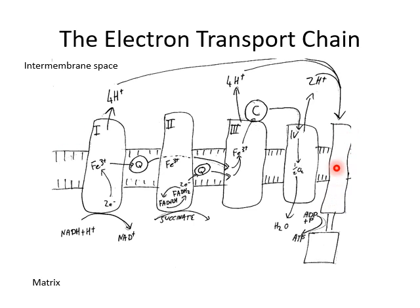On this end we have ATP synthase, which has a protein bridge whereby hydrogen ions can move from the intermembrane space into the matrix, and this causes spinning of a core part of this molecule, which synthesizes our ATP — it literally crushes ADP and phosphate together. We start with NADH plus H+, which has accepted electrons from our nutrients, and now they need to donate their electrons to this electron transport chain, so they donate two electrons and go back to being NAD+.